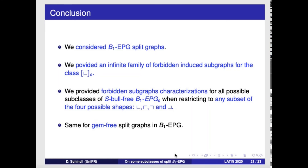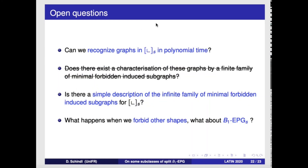In conclusion, we studied subclasses of split B1 EPG graphs. The new results are: an infinite family of forbidden induced subgraphs for split L-shaped graphs; and complete forbidden induced subgraph characterizations for s-bull-free and gem-free cases. Open questions: we still lack a polynomial-time recognition algorithm for split L-shaped graphs; the characterization exists but cannot yet be turned into a polynomial algorithm. We also ask whether there is a simple description of the infinite family of forbidden induced subgraphs.